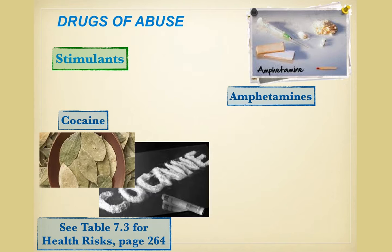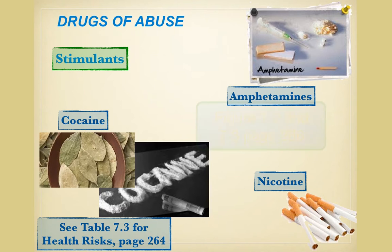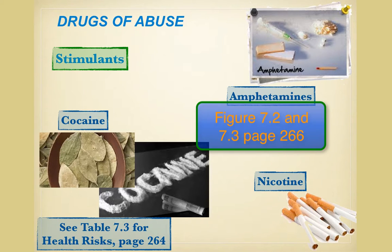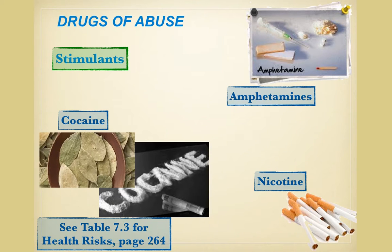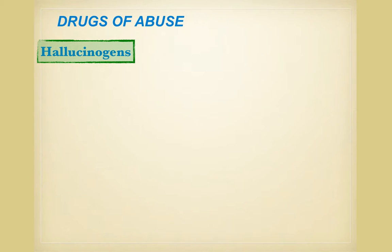Overdosing on cocaine can include insomnia, restlessness, nausea, tremors, hallucinations, and even death. Another form of stimulant is nicotine — repeated use, usually in the form of cigarette smoking, can lead to physiological dependence. On page 266, figures 7.2 and 7.3, you'll see charts associated with stimulants. Hallucinogens, also known as psychedelics, include LSD, psilocybin, and mescaline. Other drugs with similar effects are cannabis, also known as marijuana, and PCP, phencyclidine.